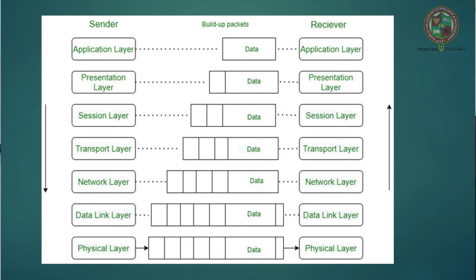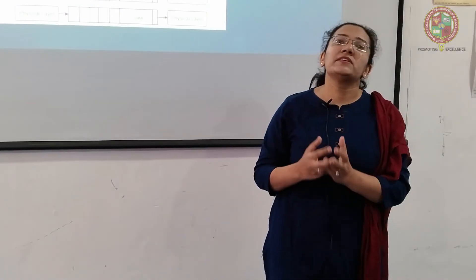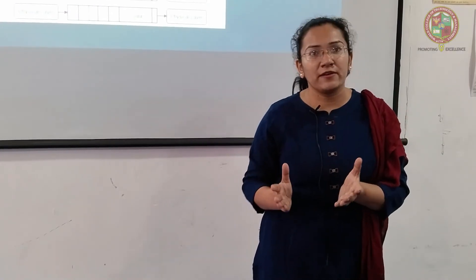The seven layers of the OSI model are: physical layer, data link layer, network layer, transport layer, session layer, presentation layer, and application layer. The bottom three layers are known as hardware layers and the upper three are software layers. The transport layer is the heart of the OSI model, as it helps communicate from one network to another.